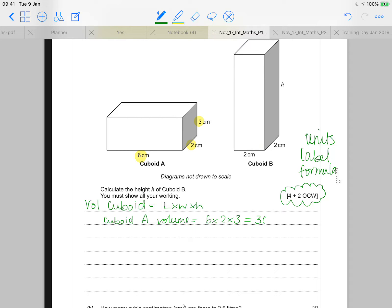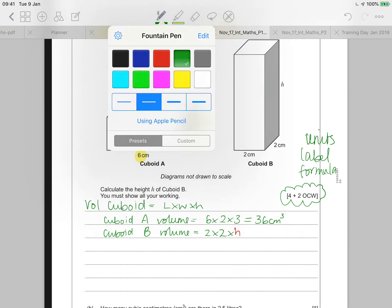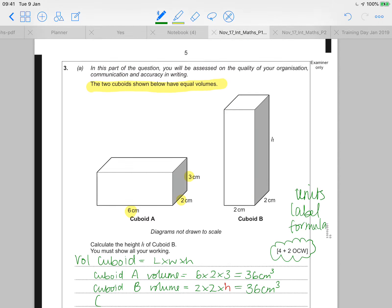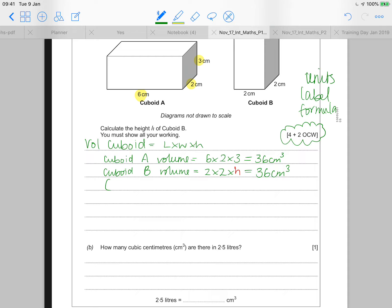So that gives me 36 centimetres cubed. Please note, I'm putting in my units, centimetres cubed. So this also means that the cuboid B, which I can write the calculation down as being 2 times 2 times H, is also equal to 36, because we were told that they're the same. It said there in the question, equal volumes.